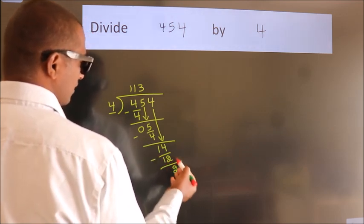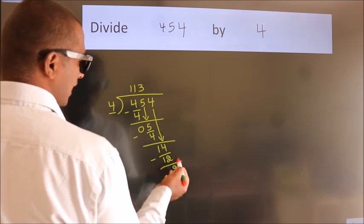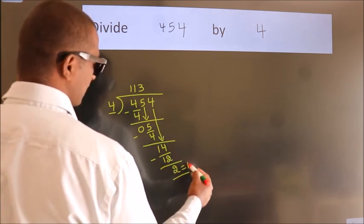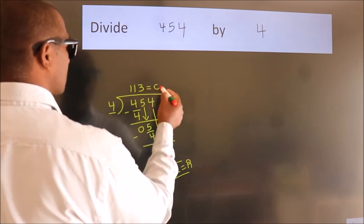After this, no more numbers to bring it down. So, we stop here. This is our remainder. This is our quotient.